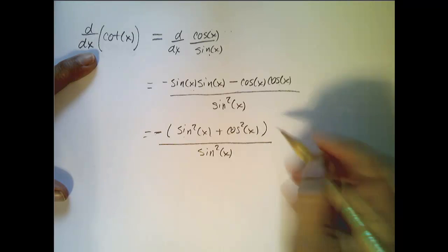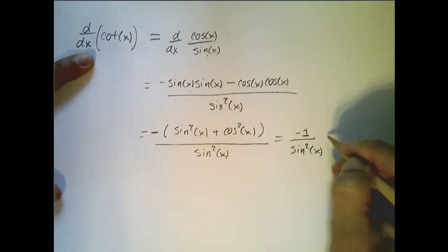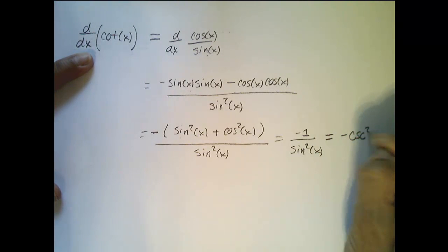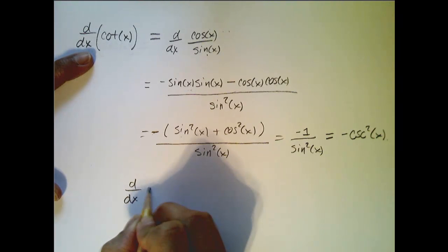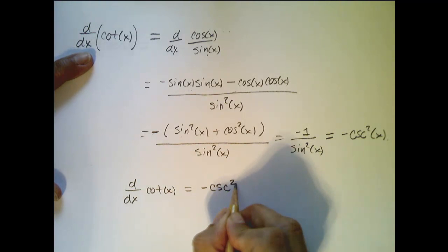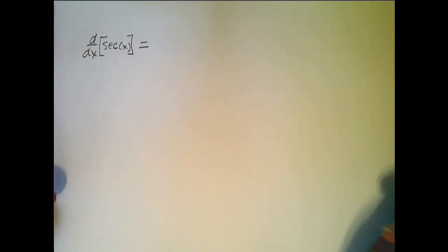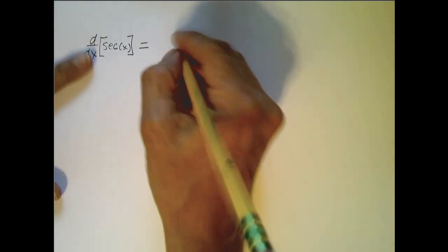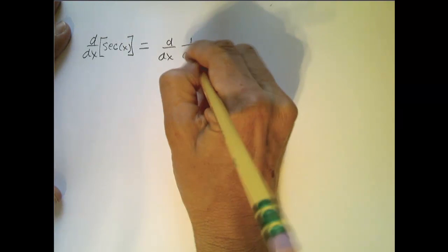So this is equal to negative of sine squared x plus cosine squared x, all over sine squared x. Again this equals 1, so this is negative 1 over sine squared x, which simplifies to negative cosecant squared x. So the derivative of cotangent of x is equal to negative cosecant squared of x. Two down, two to go. Let's now look at the derivative of secant of x, which is equal to 1 over cosine of x.